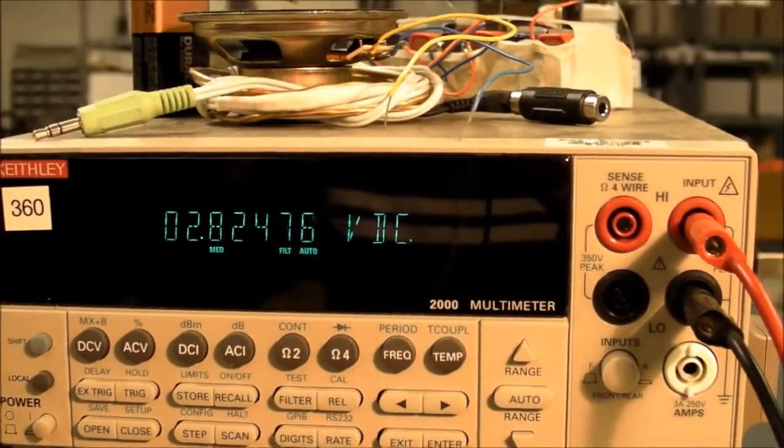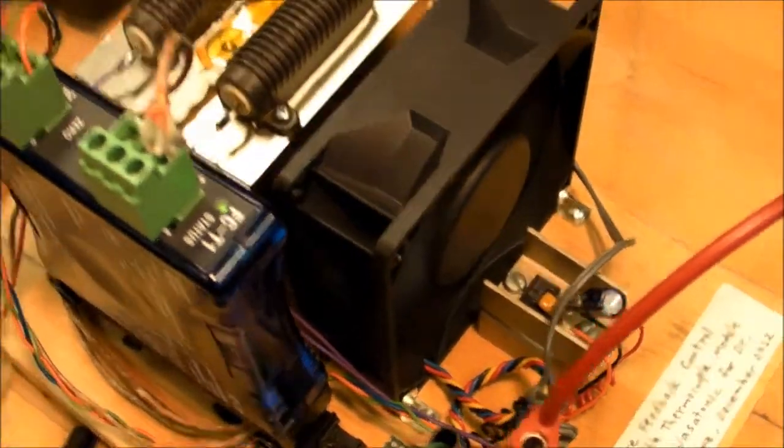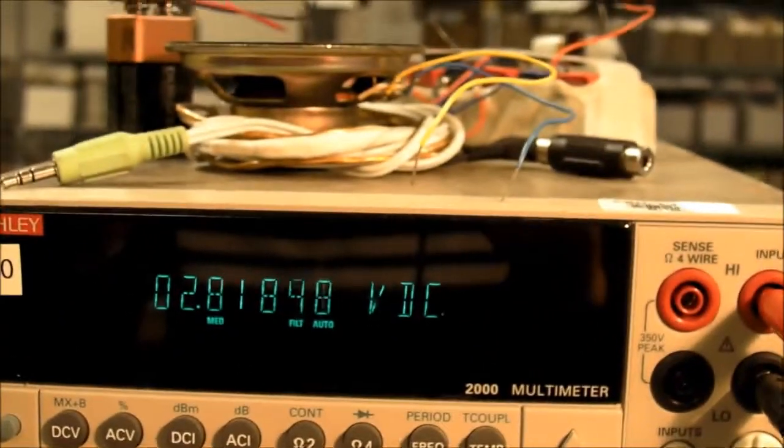We're looking at 2.82 volts and that's with the fan on its lowest speed. Let me take the ground connection off the blue wire for the fan and now it's speeding up and we should see the voltage start to go down as the temperature of the heat sink slowly drops.